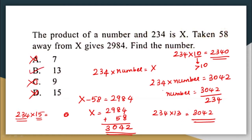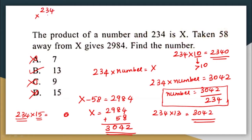To summarize this approach: you can divide 3,042 by 234 directly. If division is difficult, check with the options. Options A and C are wrong because the values are less than 10. Option D is wrong because multiplying 234 by 15 gives a last digit of 0, not 2. So the correct answer is option B.